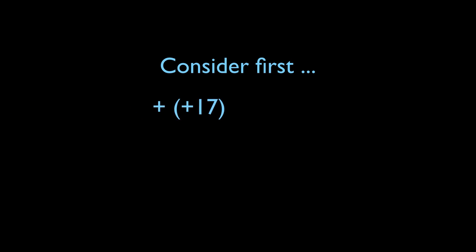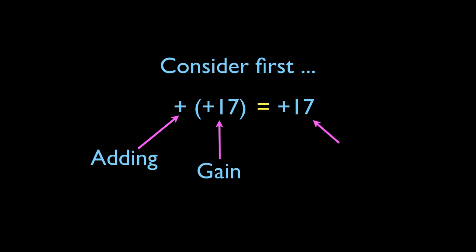Looking at plus positive 17, there we have double signs. What I want you to think of is this addition sign as being equivalent to adding, whereas the positive for the 17 implies that this number is a gain. That goes back to our introduction to integers when we talked about gains and losses. A positive integer is considered a gain. So if we're thinking about a bank account and we add a gain of 17, that is equivalent to a gain of 17, positive 17. So adding plus 17 can be written just as positive 17.